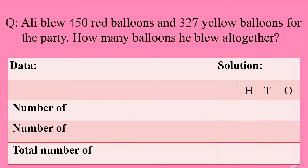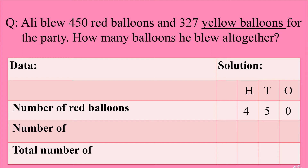We have to go to the solutions place. We will mention H, T, O — hundreds, tens, and ones. Now we extract data from the question. See the first number — what is written in front of it? Yes, red balloons. So the first line will be 'number of red balloons' and we write 450 in front of it under hundreds, tens, and ones.